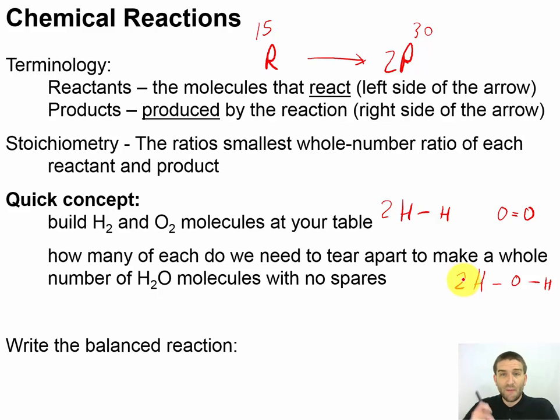Now go ahead and pause and try writing that as a balanced chemical reaction. Okay so my reactants were H2 and O2. I had to have two hydrogens so I'll put the coefficient out here in front. Remember that when we have a coefficient in the front that is not changing anything about the structure.